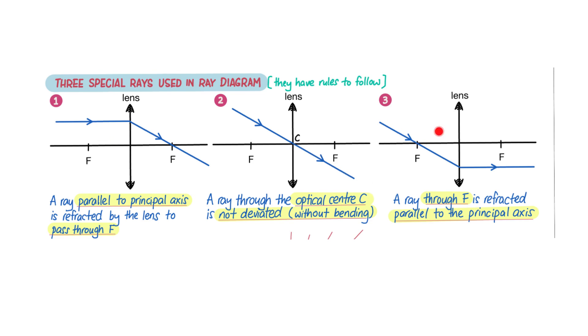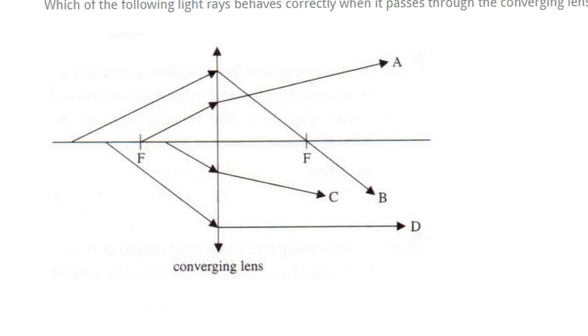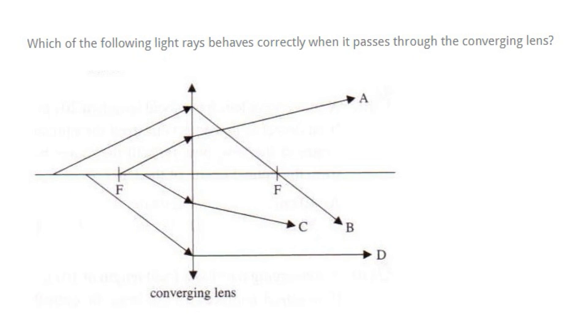And the third one is the reverse of your number one. If it passes through F first, after passing through the converging lens it must be parallel to the principal axis. Both are the same because light is reversible. If light traveling here is true, then light traveling opposite direction will be true also. So if you know this by heart, it's very easy to solve this question.